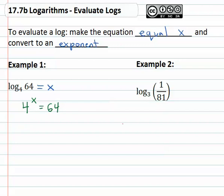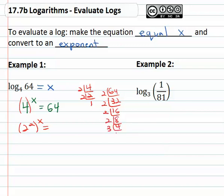We've solved problems like this before, we just have to get a common base on both sides. A good way to do this is to find the prime factorization. Four is two squared, still to the x, equals sixty four divided by two is thirty two, divided by two is sixteen, divided by two is eight, divided by two is four, divided by two is two, divided by two is one. Sixty four is two to the sixth.